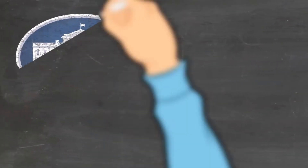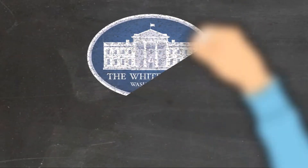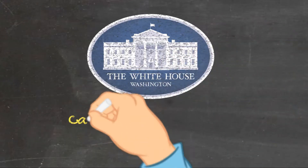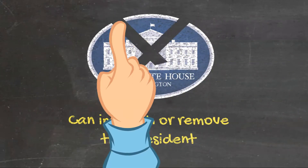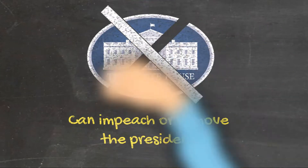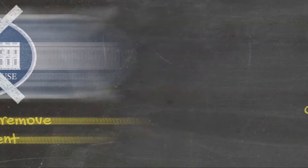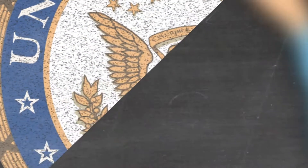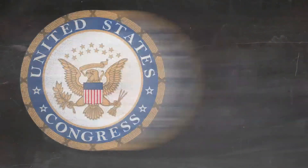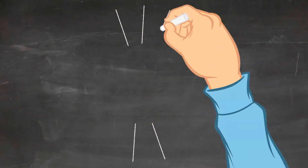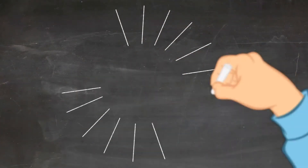Finally, Congress holds the power to impeach and remove the president, provided sufficient members vote for this action. Surely all of these powers make Congress the most powerful of the three branches of government — watch part four to find out.